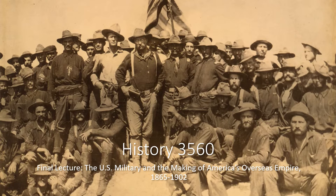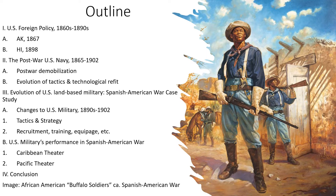Hello everyone, welcome back to History 3560. In this video we're going to discuss the US military's role in the building of America's overseas empire. We'll start our discussion by considering US foreign policy in the 1860s through the 1890s. We'll discuss the purchase of Alaska in 1867 and then the annexation of Hawaii, which was accomplished in 1898. After that we'll discuss the post-war US Navy, its demobilization and then its remobilization and the evolution of its tactics and technology. Then we'll discuss the evolution of the US's land-based military and we'll use the Spanish-American War of 1898 as a case study.